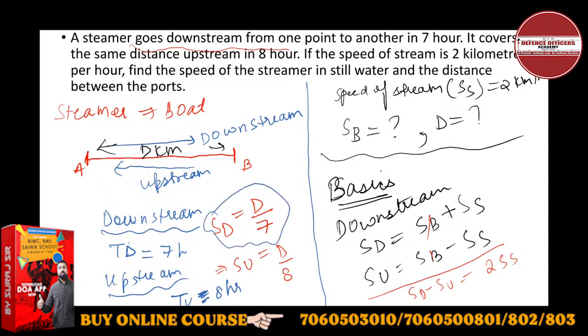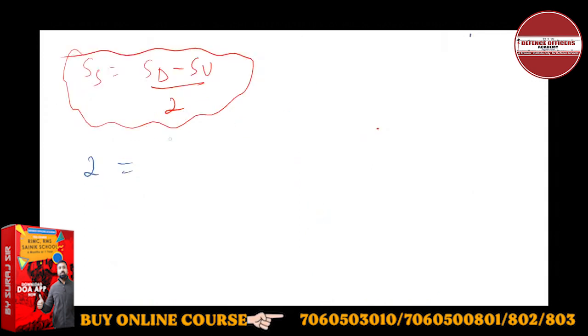Now when I put the values in this equation, SS equals 2. SD is D by 7, SU is D by 8, upon 2. Distance will come very easily. By cross multiplication, 4 equals D by 7 minus D by 8. Taking LCM of 7 and 8, which is 56.